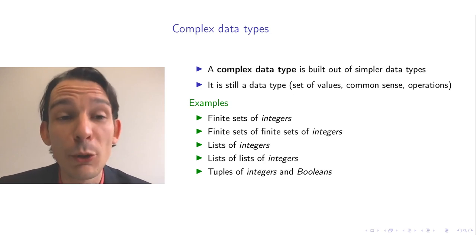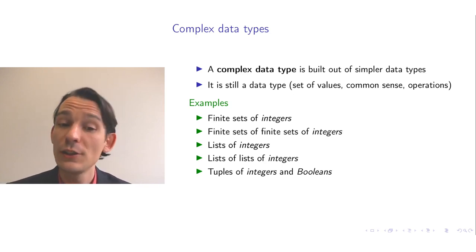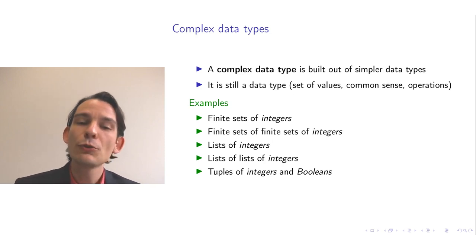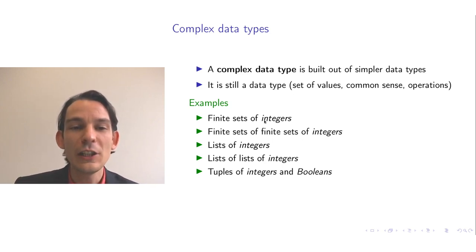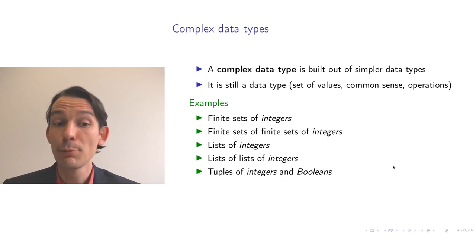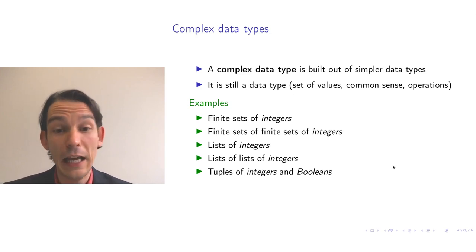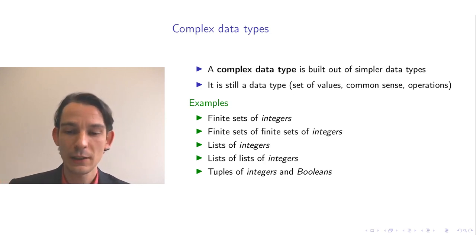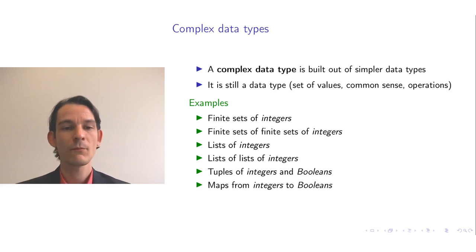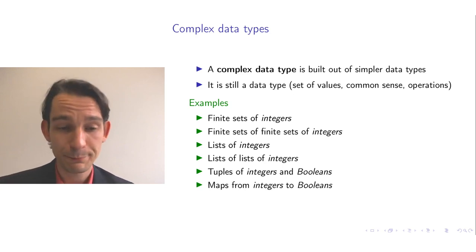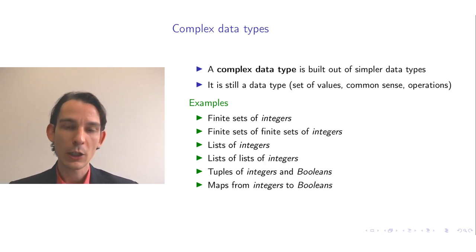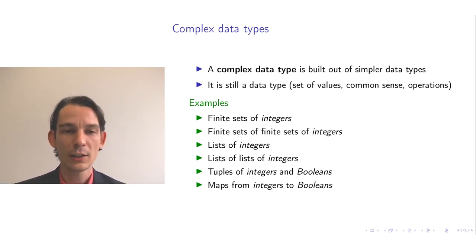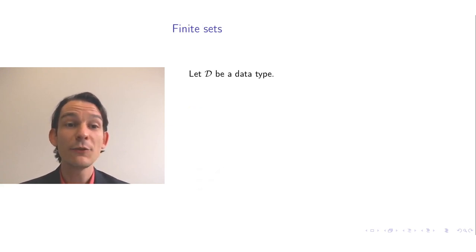Another example of a complex data type would be tuples of, say, integers and booleans. You could also have tuples of lists of integers and finite sets of integers, for instance. This is how you can build up complex data types. We also have maps, which I will explain later in the video. Let's start with the first and quite important complex data type, namely finite sets.